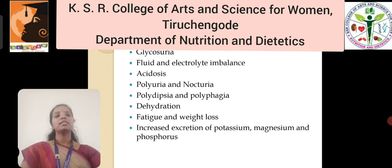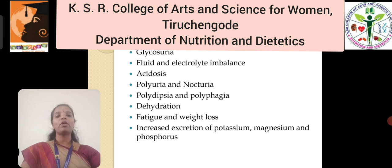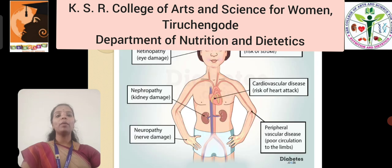Symptoms include hyperglycemia, glycosuria, fluid and electrolyte imbalance, acidosis, polyuria and nocturia, polydipsia, polyphagia, dehydration, fatigue and weight loss, and increased excretion of potassium, magnesium and phosphorus found in the blood.